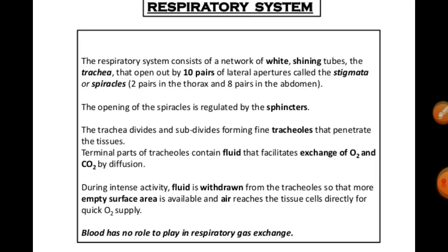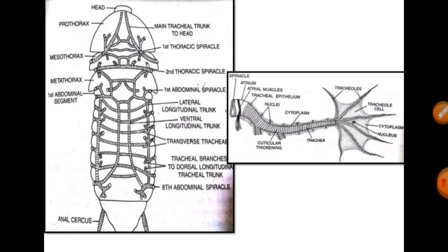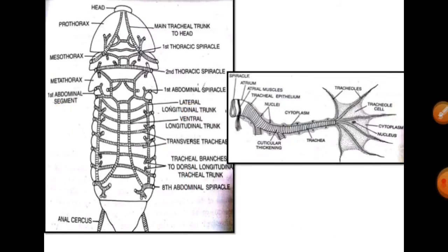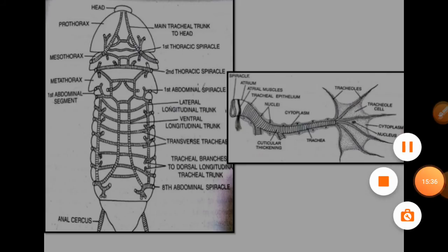The blood has no role in respiratory gas exchange in cockroaches, unlike in human beings where blood transports oxygenated and deoxygenated gases throughout the body. In cockroaches, air reaches tissue cells directly for quick oxygen supply.